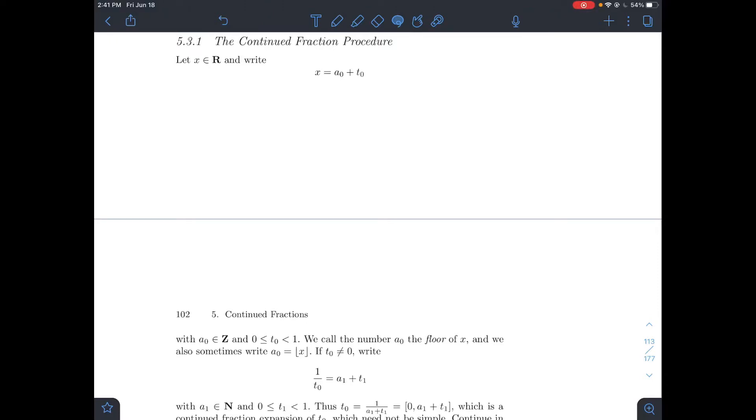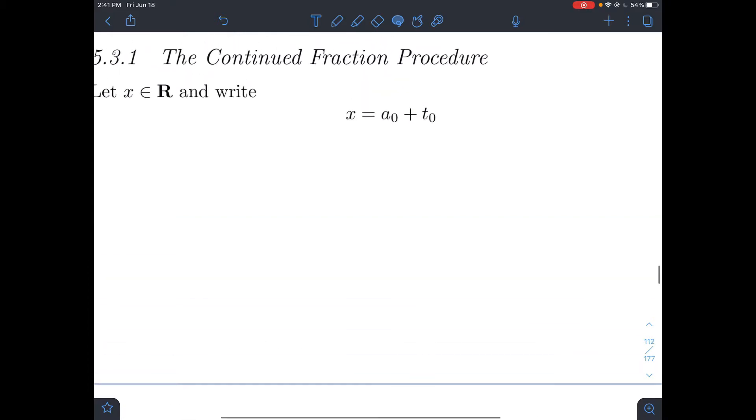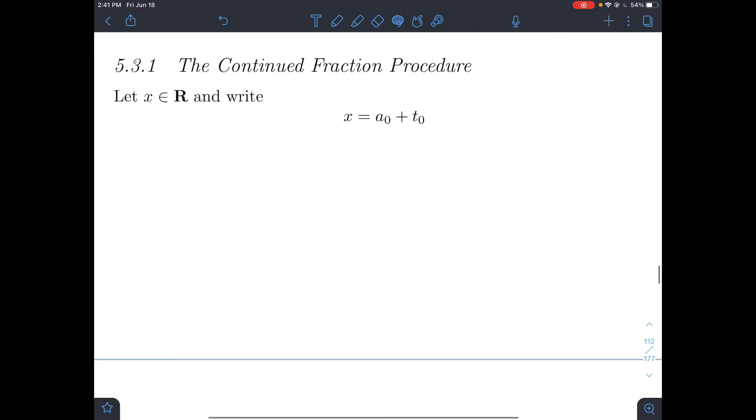This is a video about 5.3.1 in Stein's number theory book, and it's about the continued fraction procedure. So what's going on here? x is going to be any real number, and what we're going to do is rewrite x in this form, a0 plus t0.